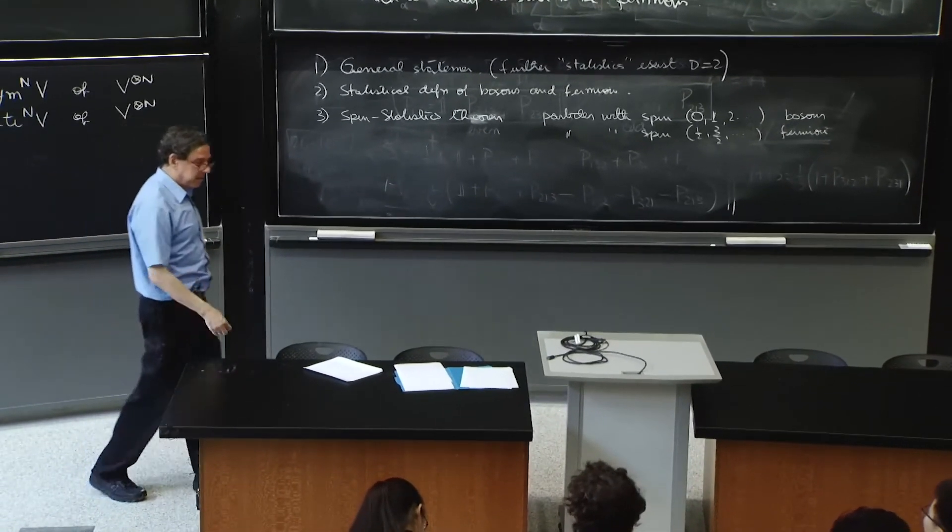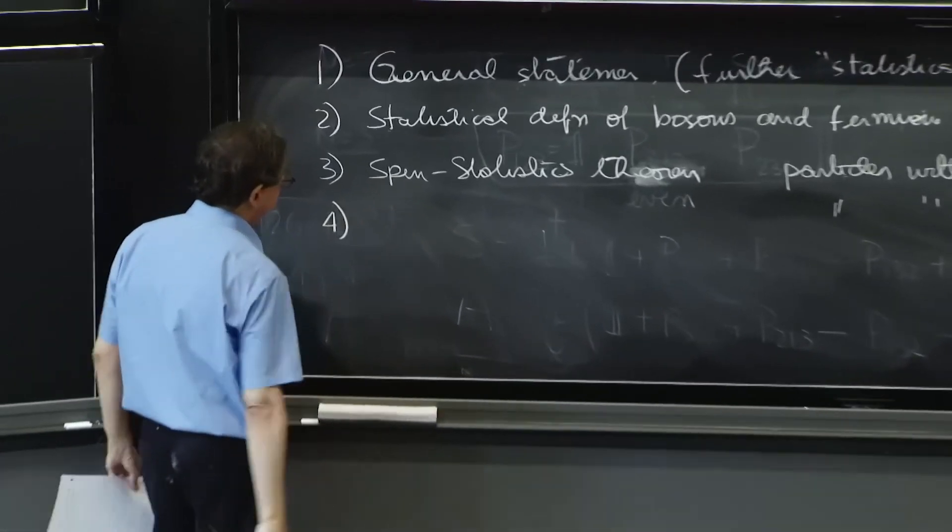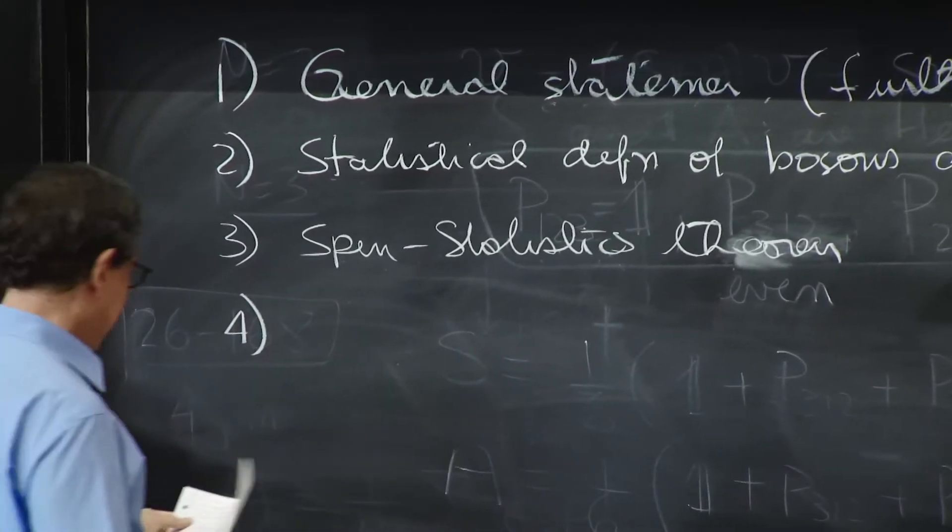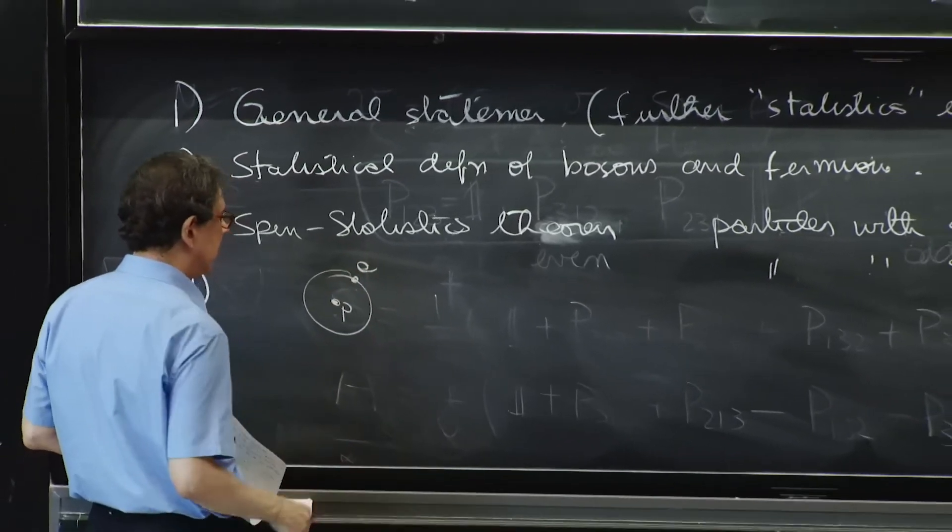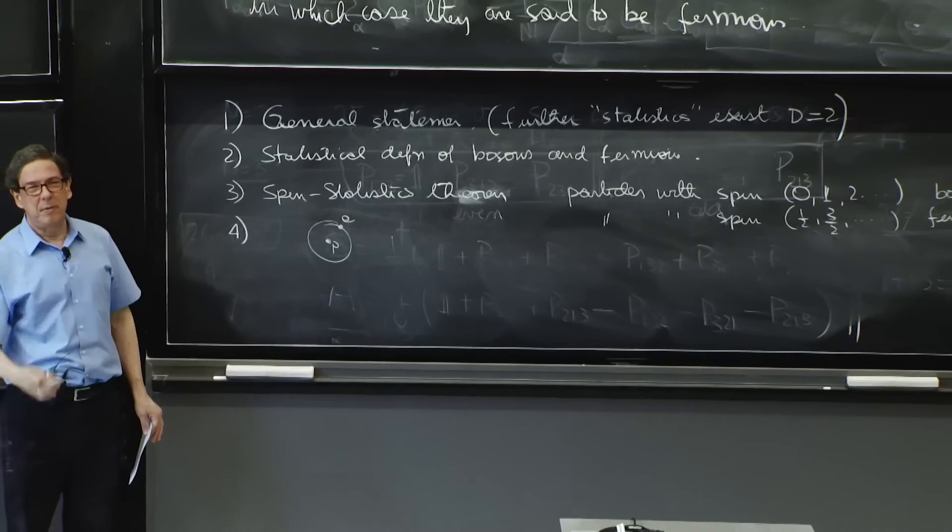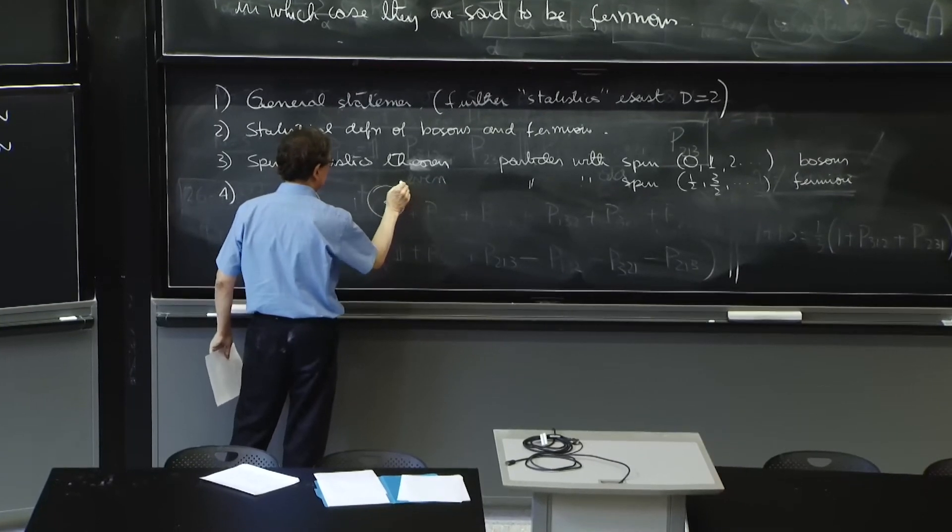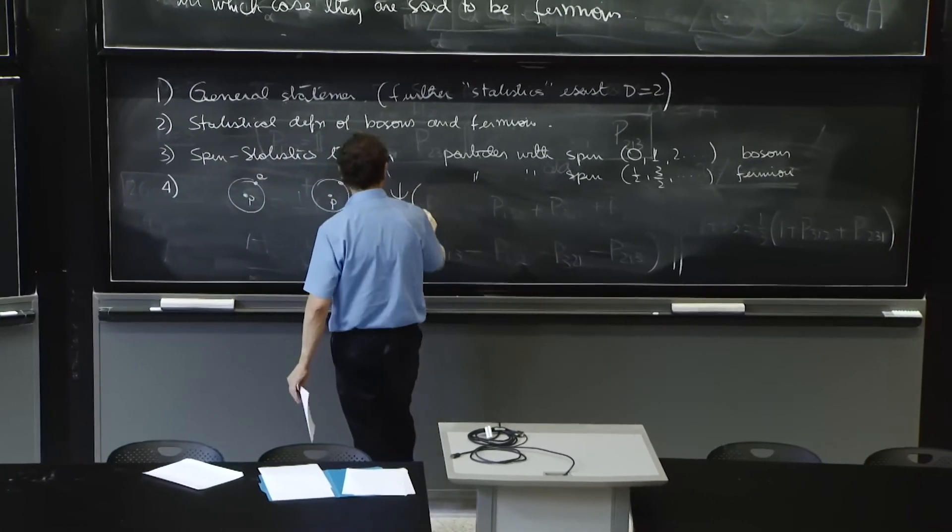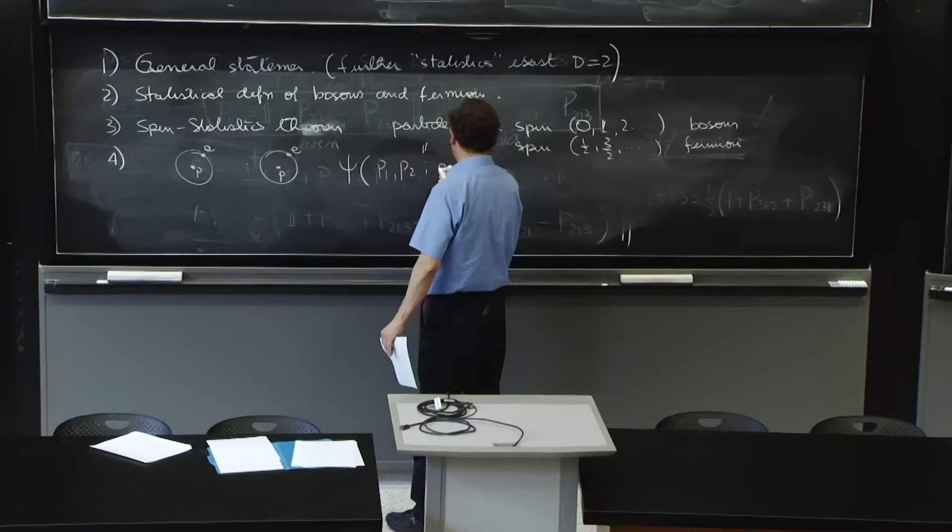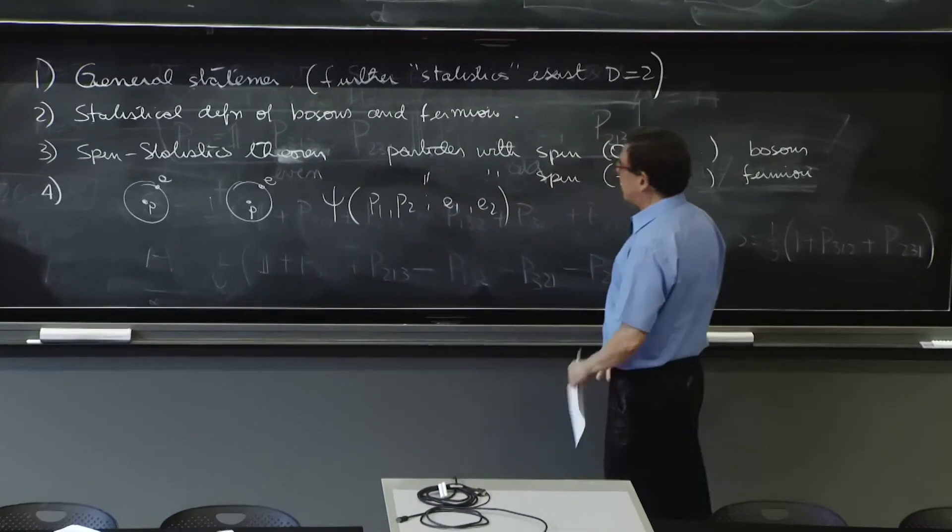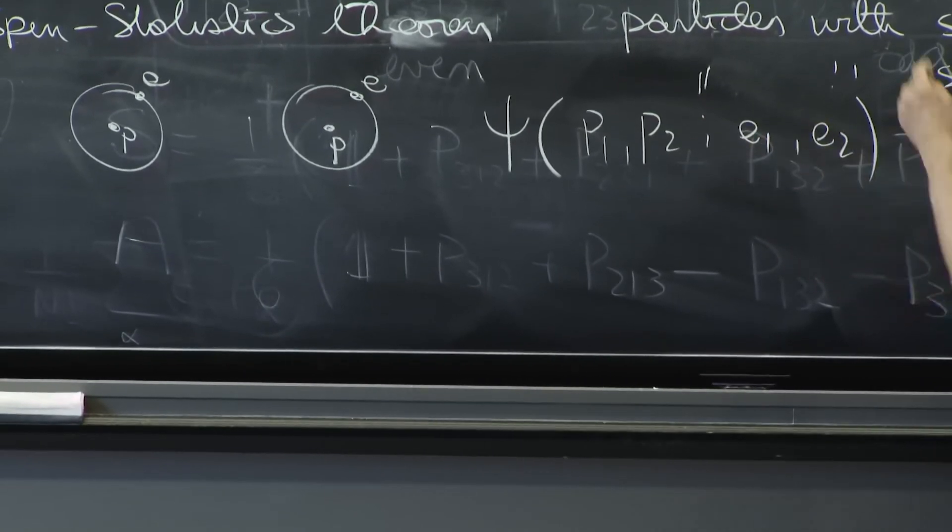Now, next fact is that you can go from elementary particles to composite particles. So if you have, for example, the hydrogen atom—this has a proton and an electron—and you want to figure out if it's a boson or a fermion, well, you think of another hydrogen atom here, P and E, and you write a wave function that involves the protons, the first proton, the second proton, the first electron, and the second electron.